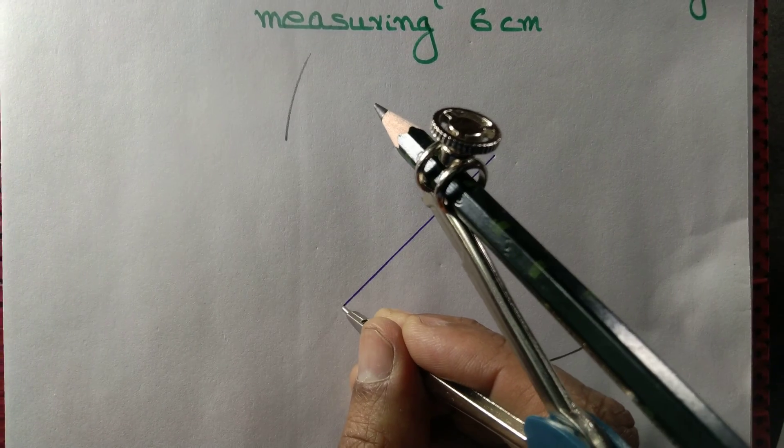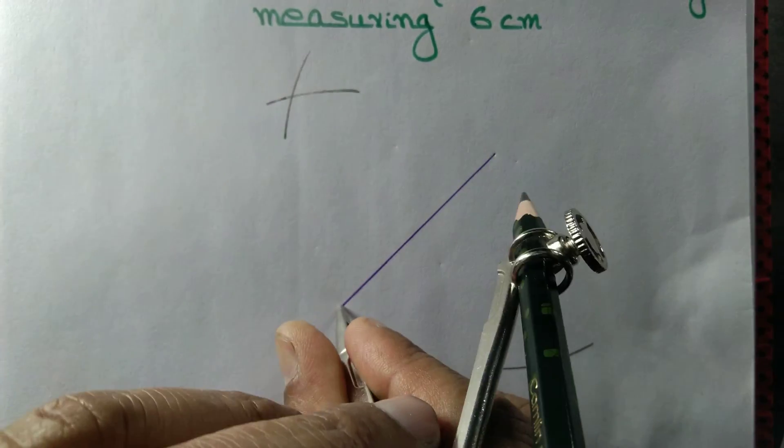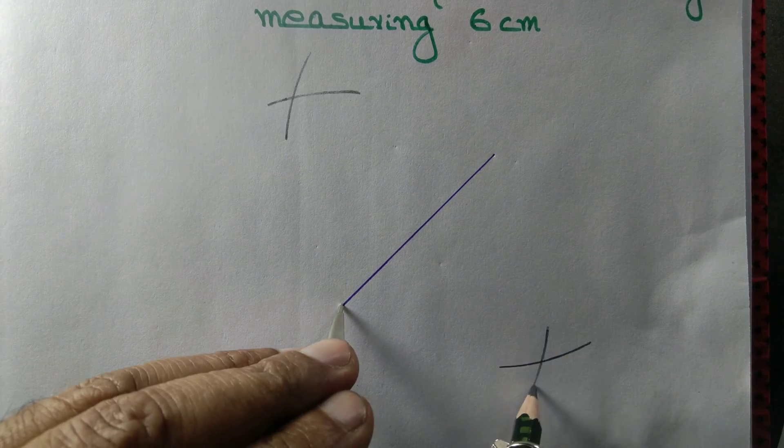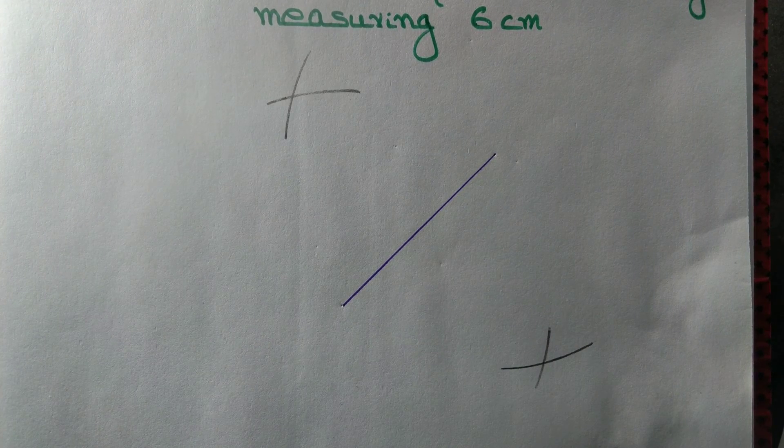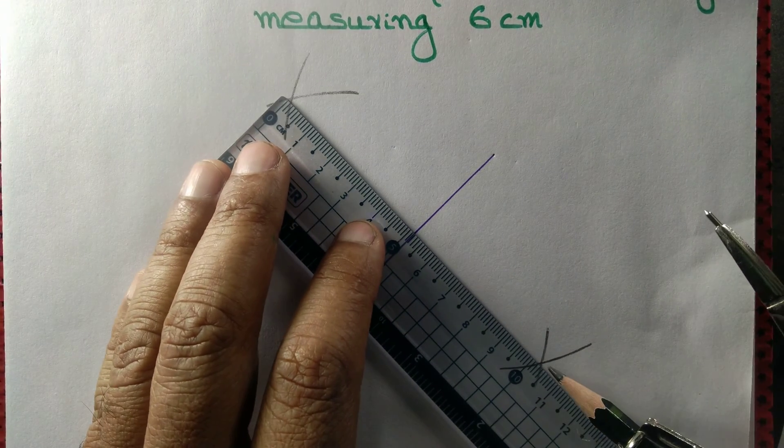Similarly, we draw 2 arcs, 1 above the diagonal, another below the diagonal, from the other end point of the diagonal. We join the intersection point of the 2 arcs by a straight line.